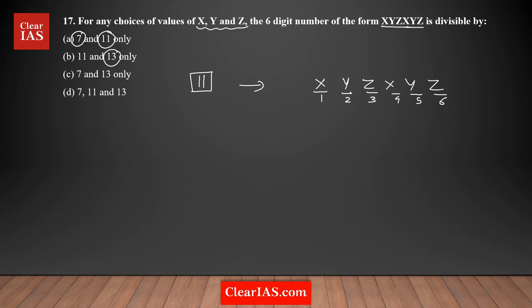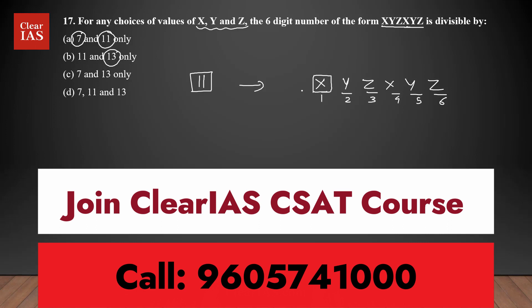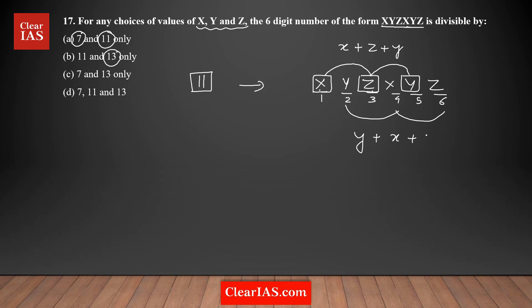Take the sum of the digits at odd positions — starting from the first digit and then every alternate digit. That gives you x, z, and y — so the sum is x + z + y. Then take the sum of the digits at the even positions, which are the remaining digits: y + x + z.